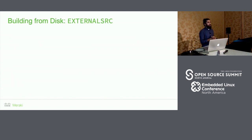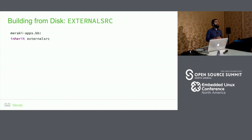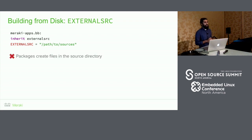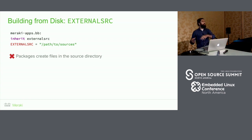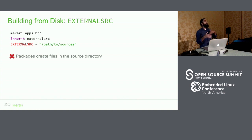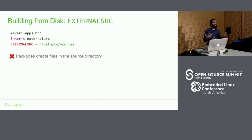Starting with building from disk, the first thing we tried was something called external source. To use it, you inherit this class and set a variable to point to your sources. The problem, however, is that this class makes it directly point to the sources on disk rather than copying them into the Yocto staging directory. If you have a package that creates artifacts in the source directory, you end up polluting your source repository and have to git clean again — the exact problem we wanted to avoid.